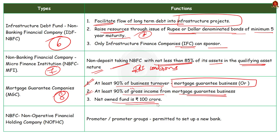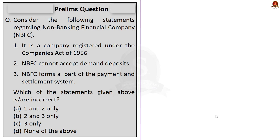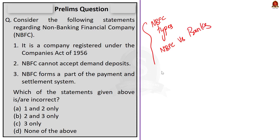The last type is NBFC Non-Operative Financial Holding Company — a financial institution through which promoters or promoter groups will be permitted to set up a new bank. That's all about this article. We discussed NBFCs, their types, and the differences between NBFCs and banks. All these points have to be remembered so that they will be very useful in handling prelims questions.